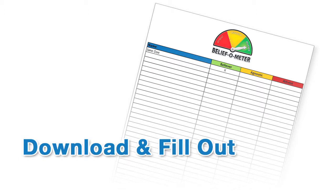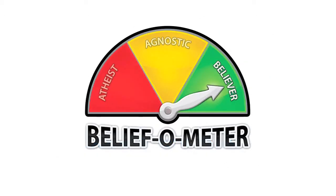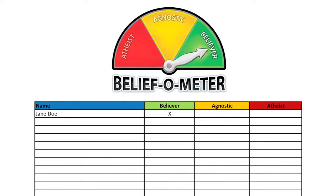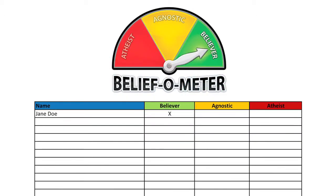With this newfound knowledge about believers, agnostics, and atheists, take a list of people you're planning to contact in the next couple of weeks and download the believe-o-meter — yes, I did just say believe-o-meter. Use it to categorize where each person falls: believer, agnostic, or atheist. For everyone on your list who is an atheist, don't spend any more time trying to convert them. Don't take it personally — they just don't believe.